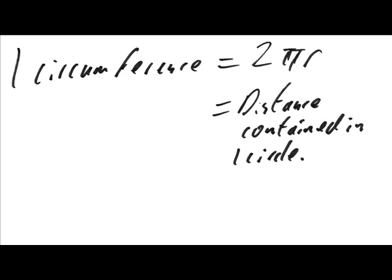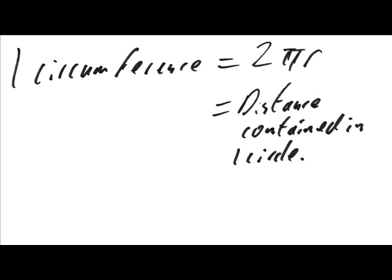This means that the speed of an object going around a circle for one rotation is 2πr divided by T. As 1 divided by T is frequency, we can say that the speed of an object going around a circle is 2πrf, where f is frequency.